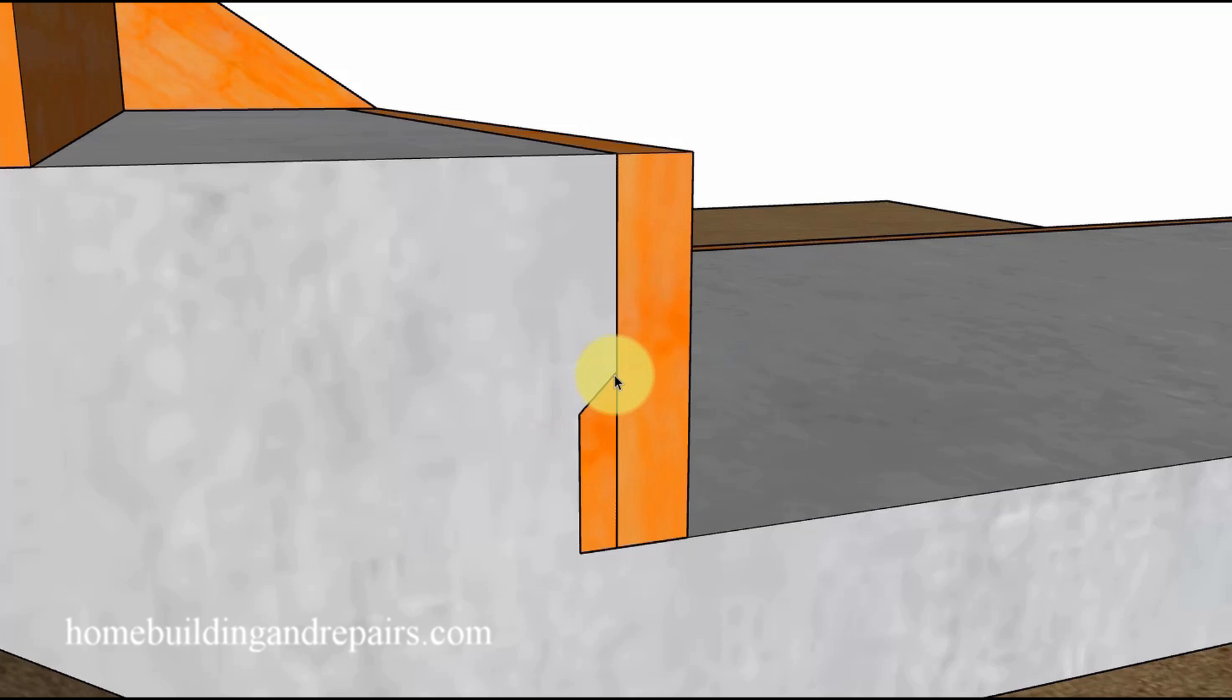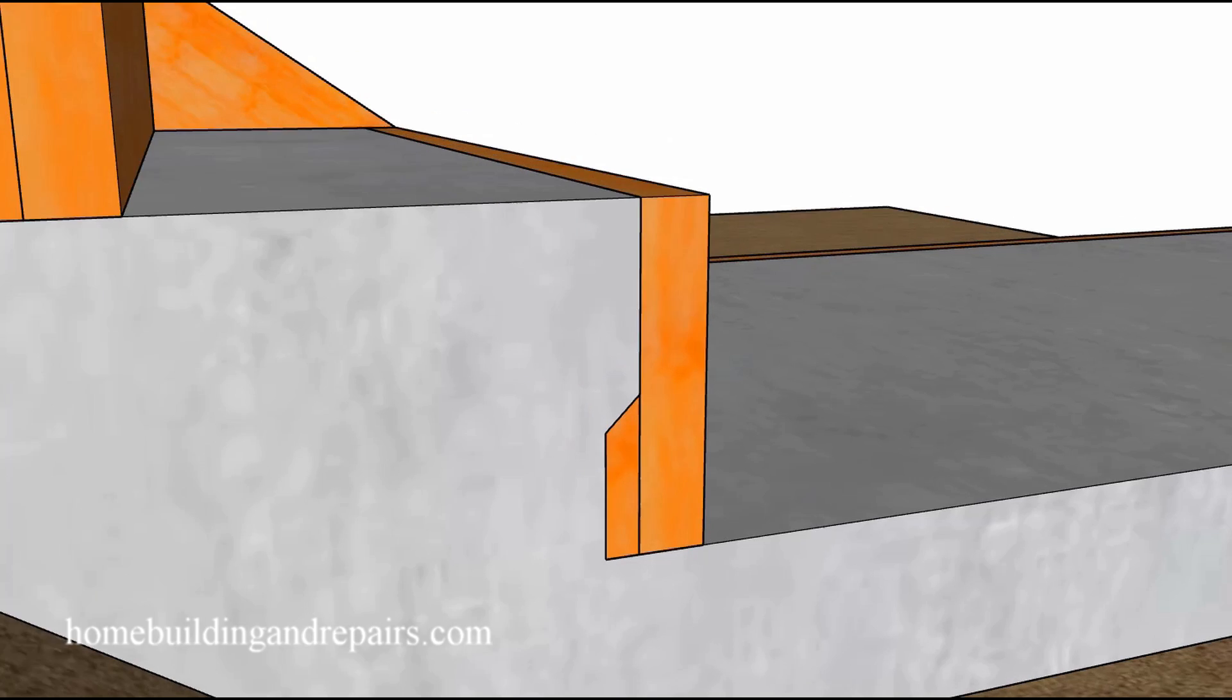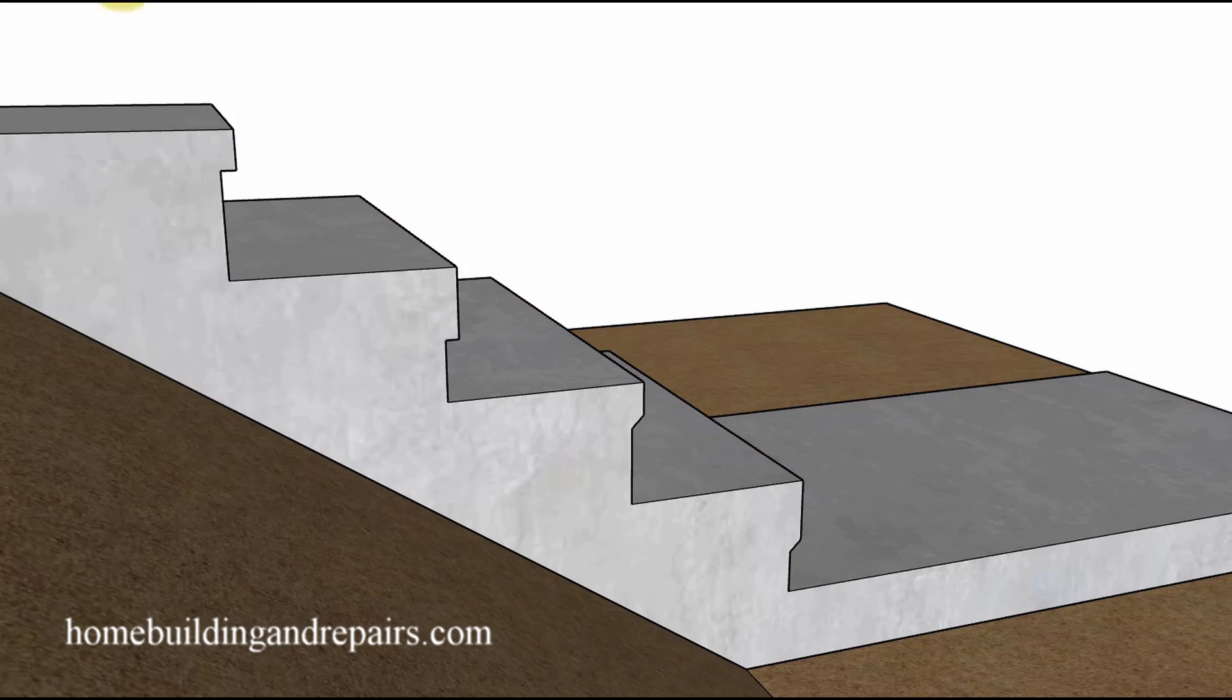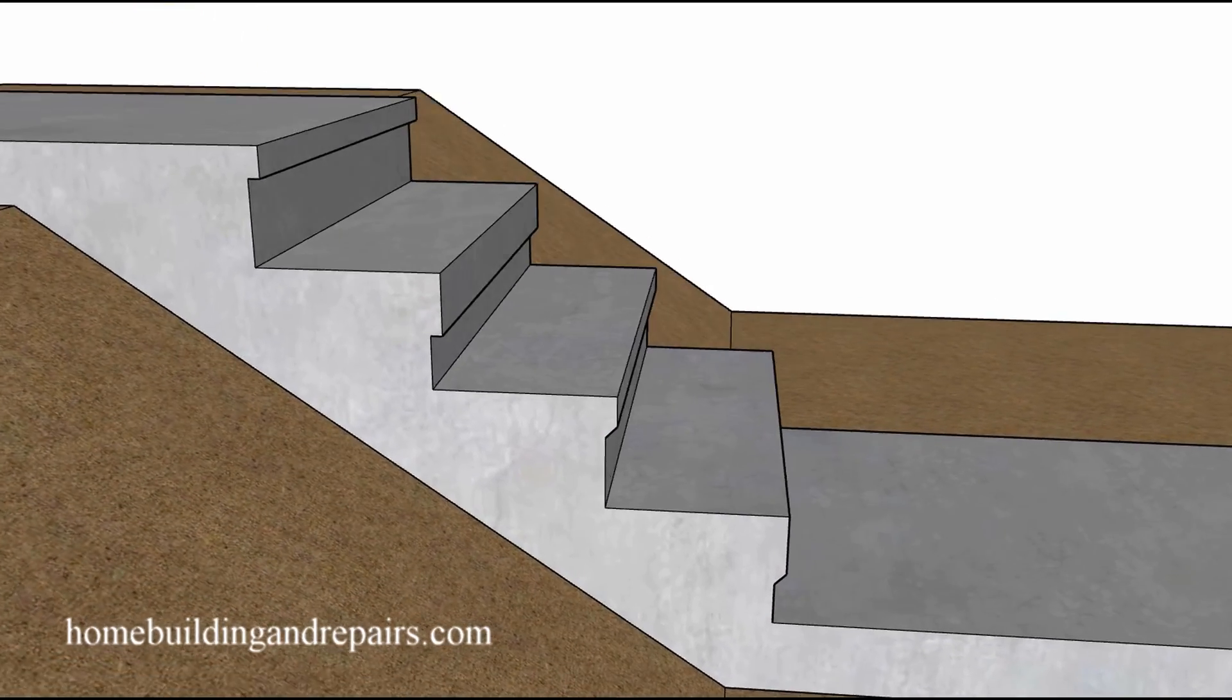This won't be too difficult to do. You will simply cut a 45 degree angle, the length of the board you're going to use to create the nosing. Hopefully not too difficult.